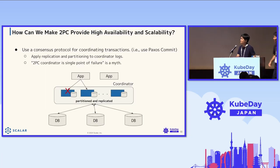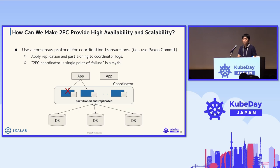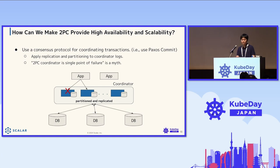From now on, I'll take over the presentation. I'd like to discuss the new 2PC approaches. First, how can we make 2PC provide high availability and scalability? One common issue with 2PC is that the coordinator can become a single point of failure, leading to concerns about availability and scalability. To address this, we can introduce consensus protocols such as Paxos commit to replicate coordinator logs and enhance availability. By using data partitioning for coordinator logs, we can also improve the scalability of the coordinator. Many recent distributed database products using 2PC have adopted this approach, and the idea that the 2PC coordinator is a single point of failure is becoming a myth.